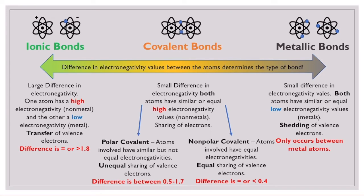Then we have a nonpolar covalent bond where there's an equal sharing. The electronegativities are so similar or identical that neither atom pulls on the electrons more than the other — we have an equal sharing of electrons. If the difference in electronegativity values for the two atoms is equal to or less than 0.4, then it's going to be a nonpolar covalent bond.